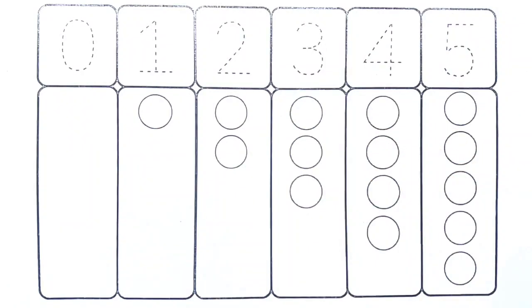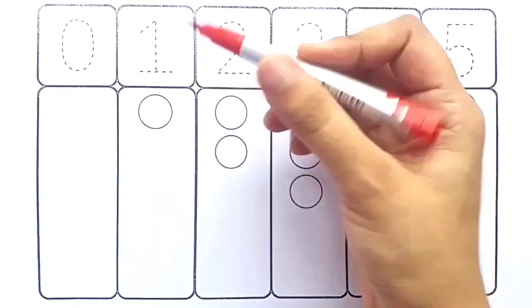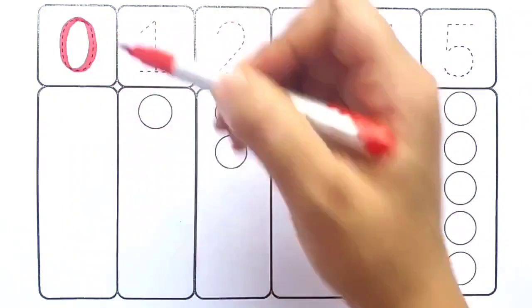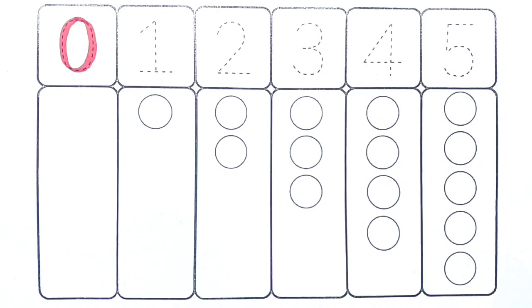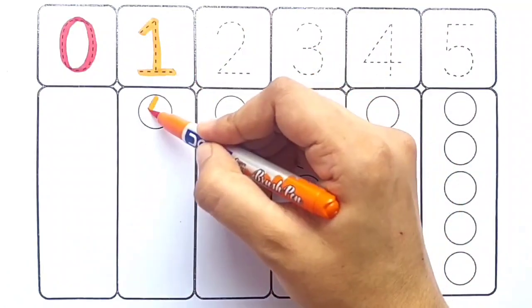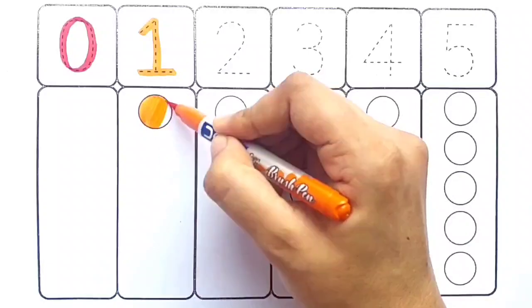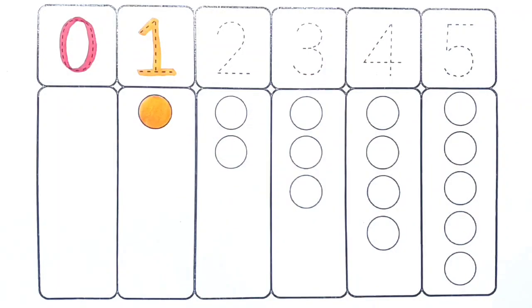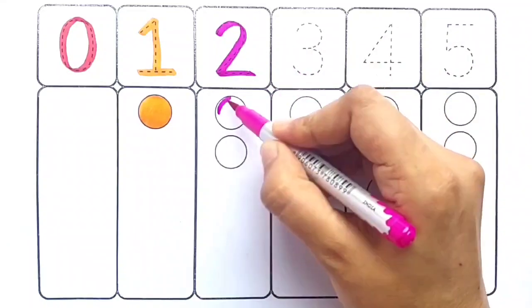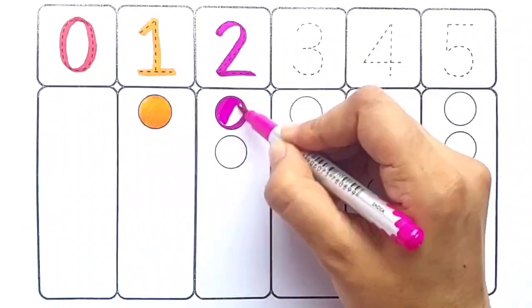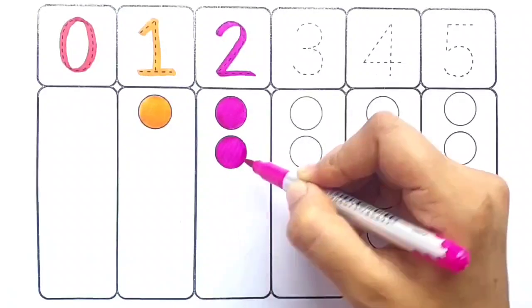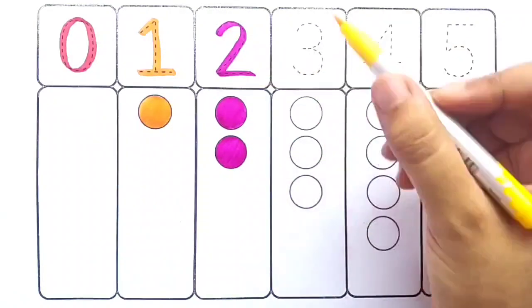Let's fill the colors. Red color zero. Orange color one, one ball. Pink color two, one two, two balls. Yellow color three.